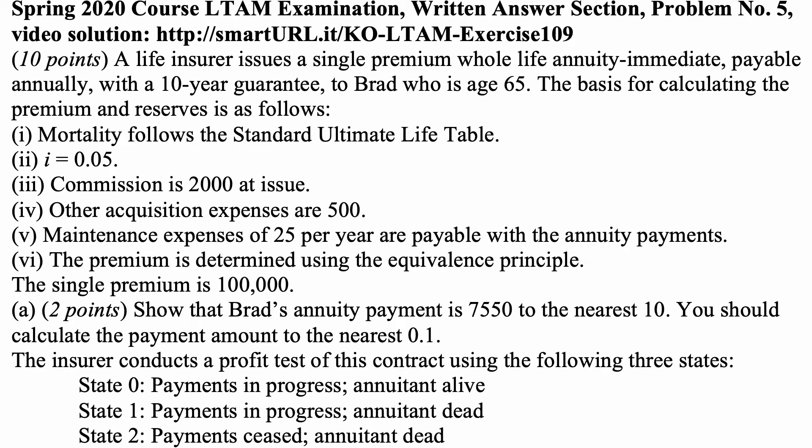The basis for calculating the premium and reserves is as follows. Mortality follows the standard ultimate life table at smarturl.it/SULT. Interest rate is 5%, commission is 2,000 at issue, other acquisition expenses are 500, maintenance expenses of 25 per year are payable with the annuity payments. The premium is determined using the equivalence principle. The single premium is 100,000.